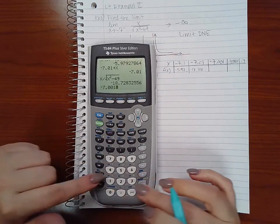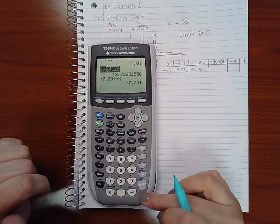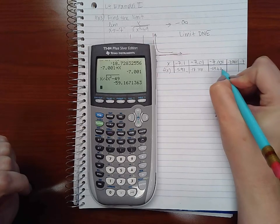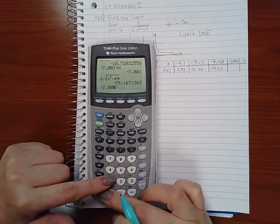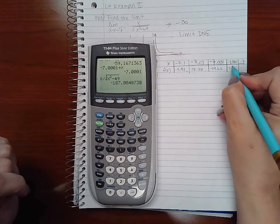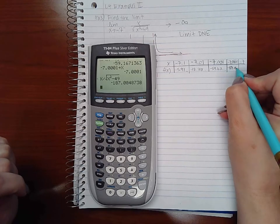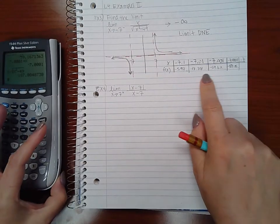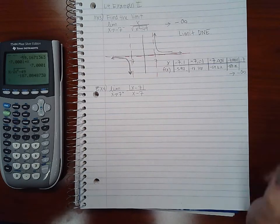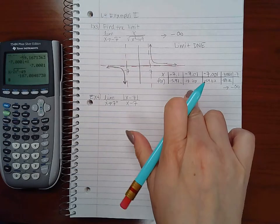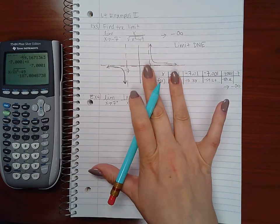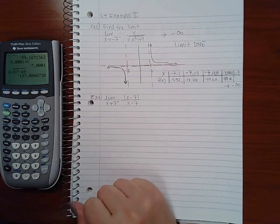Then negative 7.001, store x, hit enter, go back up, hit enter again. Then negative 7.0001. You notice these numbers are going further and further and further into negative, so eventually they do go to negative infinity.